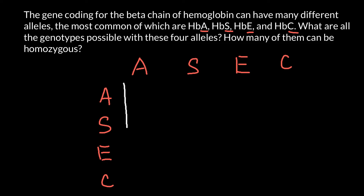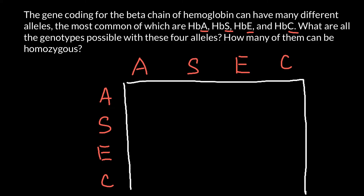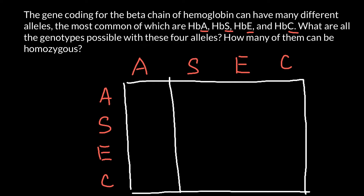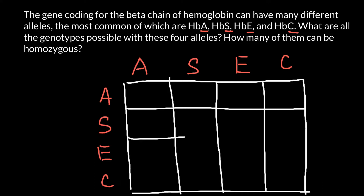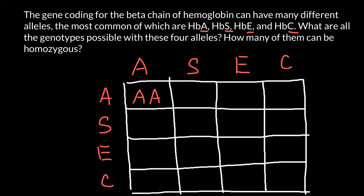Let's build a simple Punnett square, and this is how we are going to find all the possible combinations that these four alleles can produce in a diploid organism. We are going to have sixteen combinations, but this is not going to be our final answer. The first row gives us: AA, AS, AE, and AC.